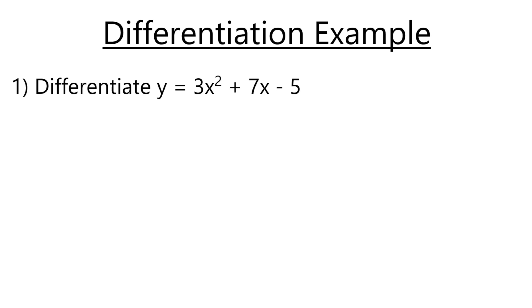When we want to differentiate y = 3x² + 7x - 5, the rules we need to follow are this. We'll do each component at a time, for example, 3x².